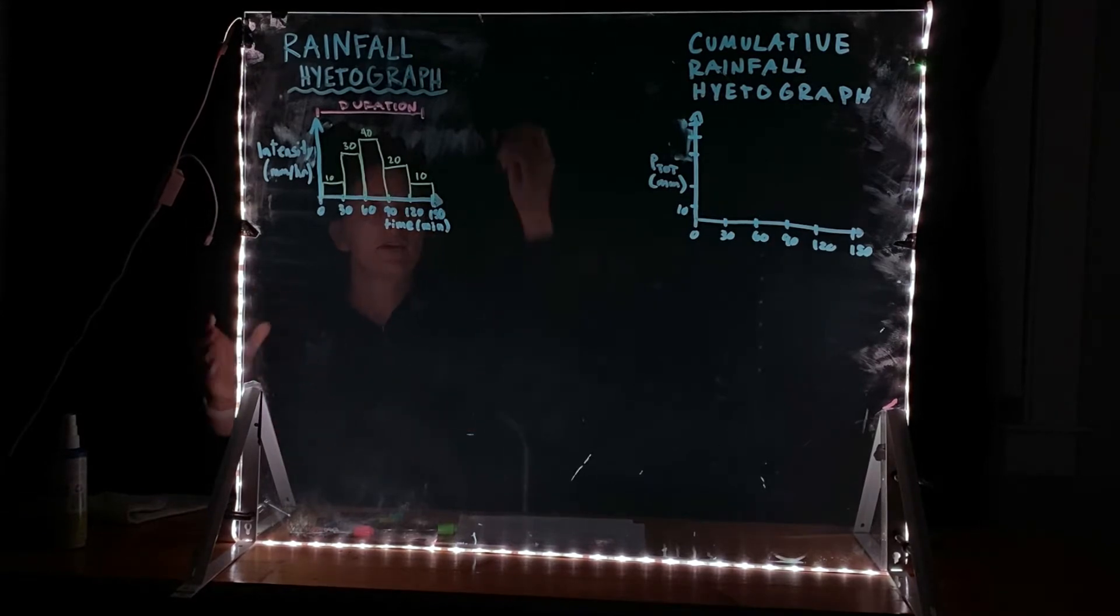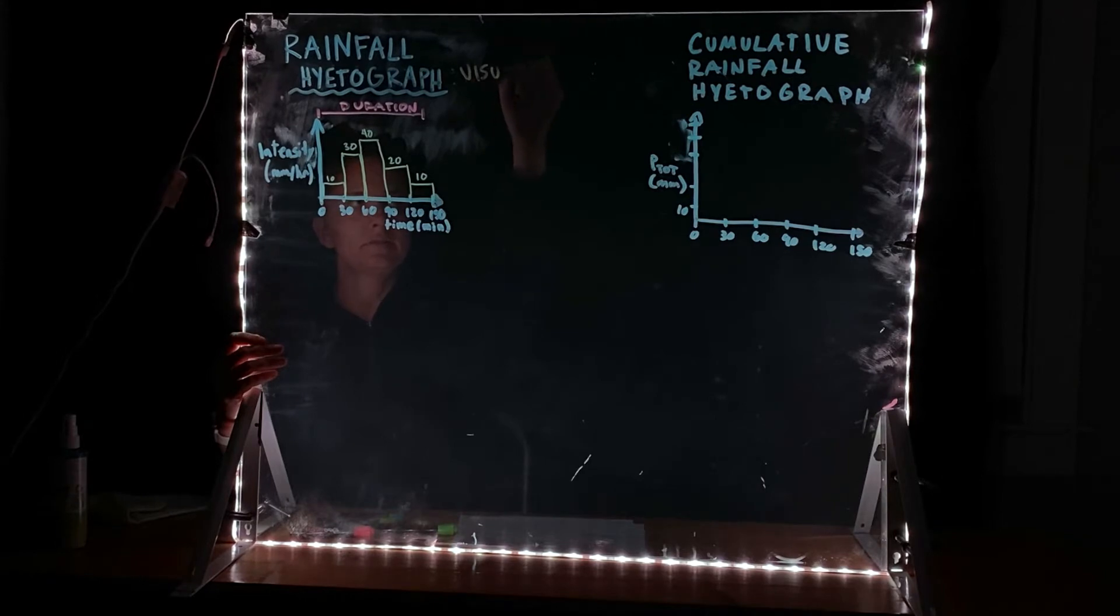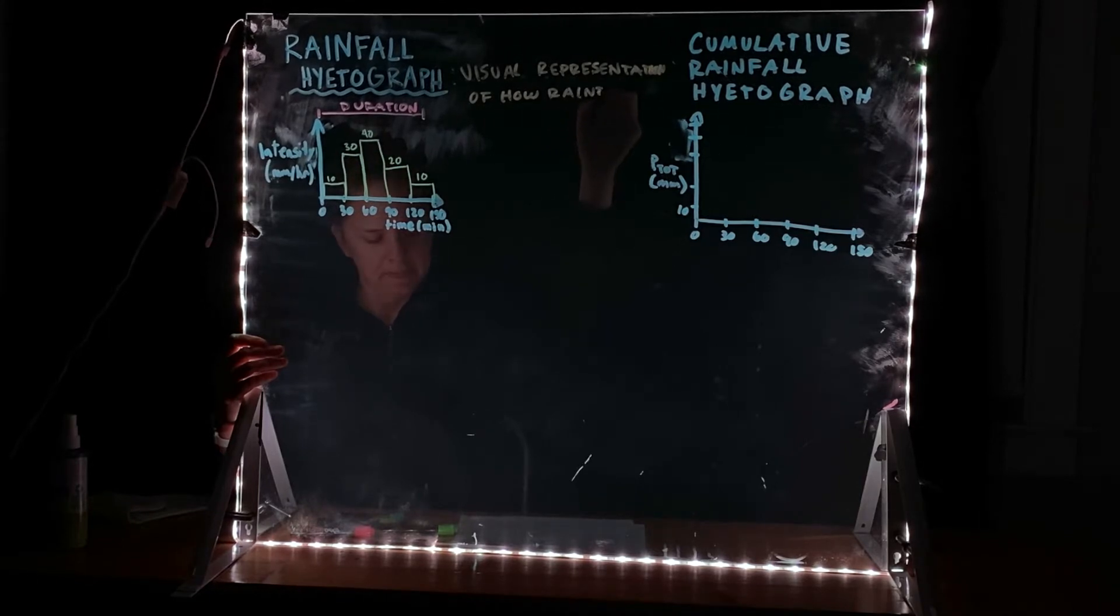So rainfall hyetograph can be defined as a visual representation of how rainfall varies over time.